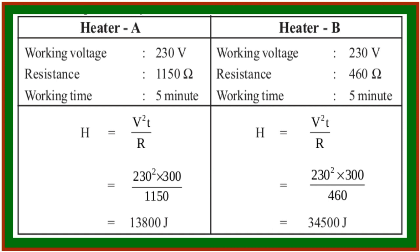The heater A heat developed is 17,400 J. The heater B heat developed is 34,800 J. Why is this difference? In our life, the lower resistance heater develops more heat.